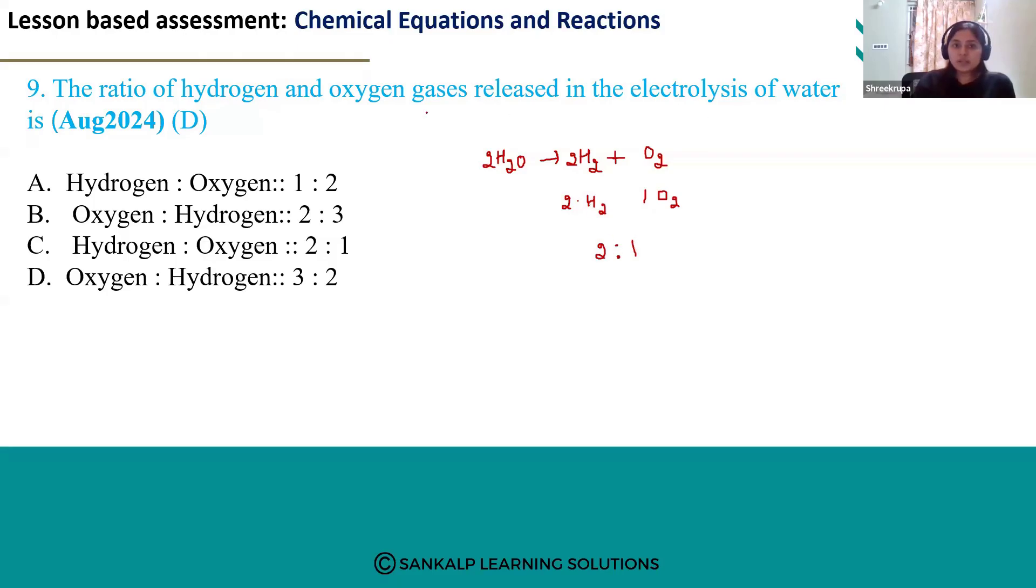So, just look at the options. Hydrogen to oxygen should be 2 is to 1. So, option C is the correct answer.